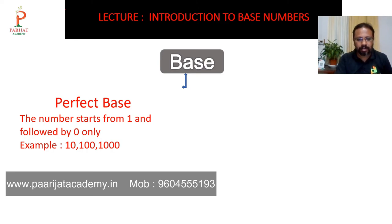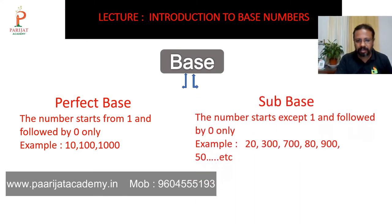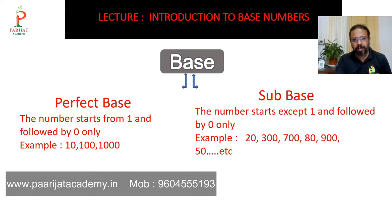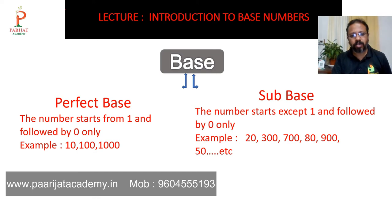Examples of perfect base are ten, hundred, thousand — powers of ten. The second is sub base, where the number starts with something other than one followed by zeros, for example twenty, three hundred, seven hundred. We have already learned this topic in the last session, but I am revising it because the base topic is dependent on other subtraction topics.